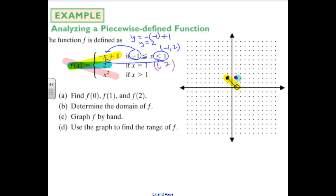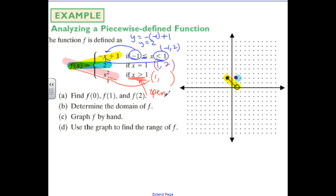Now I'll graph the last piece: y equals x squared, but only for values of x greater than one. Plugging in one gives one squared equals one, so I place an open dot at one comma one — it's open because the piece is strictly greater than one, and I already have another piece of the function there. Since it's a parabola, it opens upward from that point. You can find additional points by plugging and chugging. That completes the third piece of the function, which still passes the vertical line test.